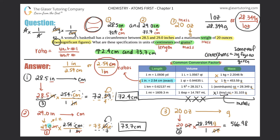Rounding 566.98 to two significant figures: the 5 and first 6 stay, but the next digit (6) tells me to round up, giving 570 grams. The zero is a placeholder — 57 is very different from 570 — and we still have two sig figs. So 20 ounces equals 570 grams. Your final answers: the circumference specifications are 72.4 cm to 73.7 cm, and the maximum weight is 570 grams.